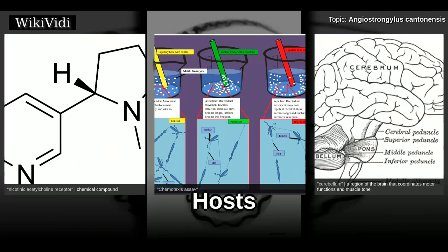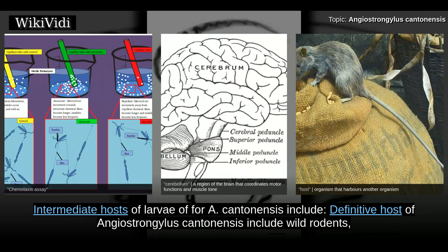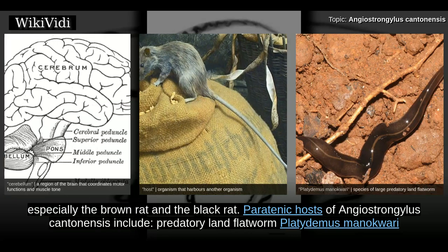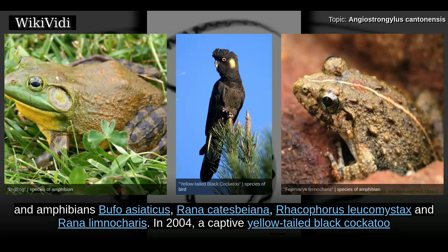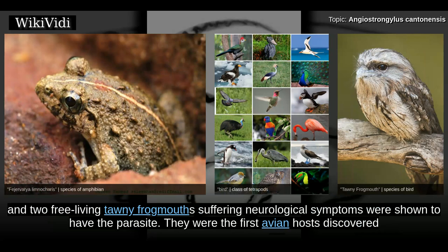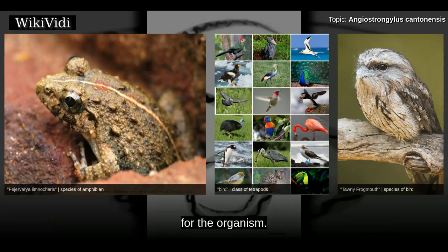Hosts. Definitive hosts of Angiostrongylus cantonensis include wild rodents, especially the brown rat and the black rat. Paratenic hosts include the predatory land flatworm Platydemus manokwari, and amphibians Bufo asiaticus, Rana cataspiana, Kaloula leucomystax, and Rana limnocharis. In 2004, a captive yellow-tailed black cockatoo and two free-living tawny frogmouths suffering neurological symptoms were shown to have the parasite, becoming the first avian hosts discovered for the organism.